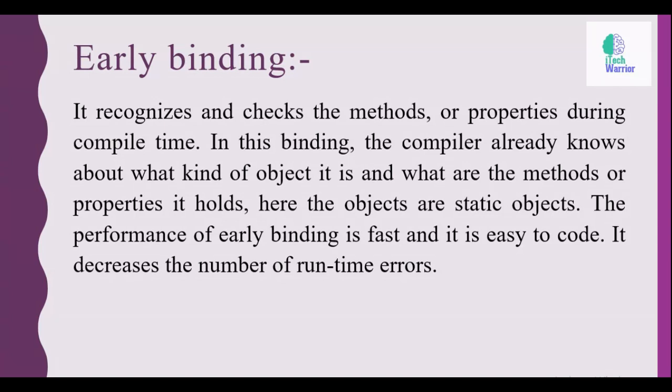For early binding, it recognizes and checks the methods or properties during compile time. In this binding, the compiler already knows about what kind of object it is and what are the methods or properties it holds. Here the objects are static objects. The performance of early binding is fast and it is easy to code. It decreases the number of runtime errors.